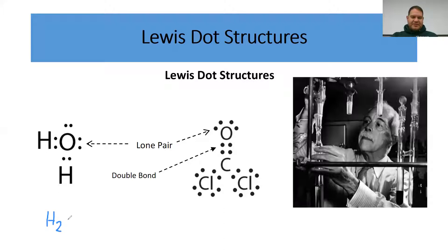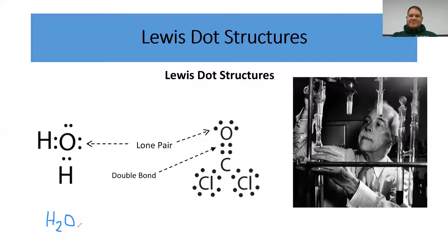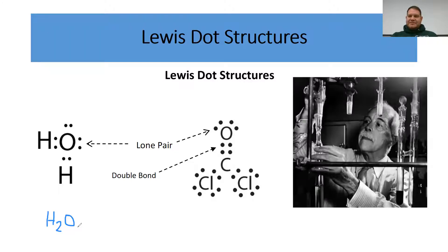The chemical formula only tells us the ratios — the two-to-one ratio — but it doesn't show how the atoms are connected to one another to form a covalent bond. Are the hydrogens connected to one another? Is the hydrogen connected to an oxygen? That's what a Lewis Dot Structure does for us — it shows us the connectivity, the bonds, and the types of bonds formed between the atoms.